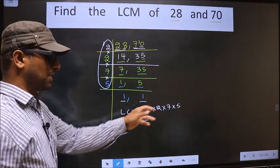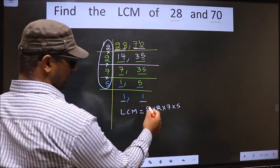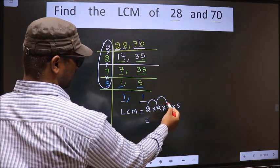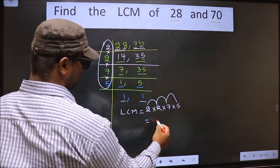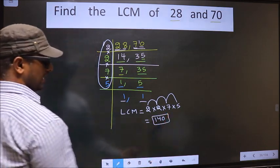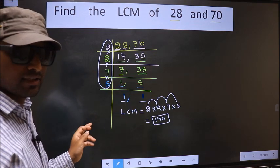Now let us multiply these numbers. That is 2 into 2, 4 into 7, 28 into 5, 140. So 140. So 140 is our LCM. Am I clear?